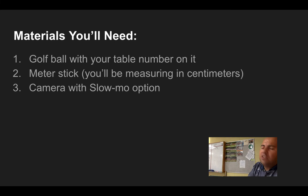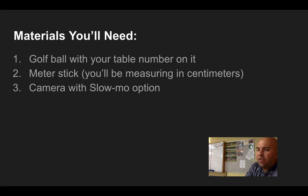Here's how I would, or this is the materials that you need. You need a golf ball, preferably a golf ball that has your table number on it. You need a meter stick. Make sure you're using centimeters, not inches. And last of all, have a camera with slow motion. If you use that, it's a lot easier to get what the actual bounce height is, but that's all. I'll let you figure out the rest.